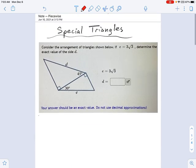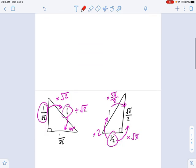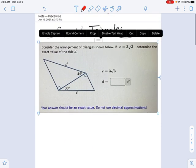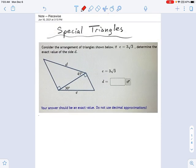So using that information, go ahead and pause the screen here if you need some time to figure that out. But using that information, I want to go through a few steps here to work my way from E over to D somehow. So let's start with E. And what is that? That is three radical three on this side.